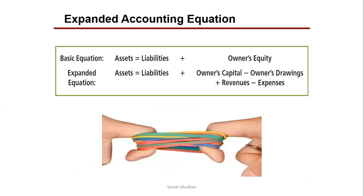Looking at the expanded accounting equation: Assets equal Liabilities plus Owner's Capital minus Owner's Drawings, because we separate the owners from the company itself. If the owner invests, their ownership rights increase; if they take something for personal use, ownership decreases. We also add Revenues and subtract Expenses, since the company works for its owners. Losses are deducted from the owner's capital.